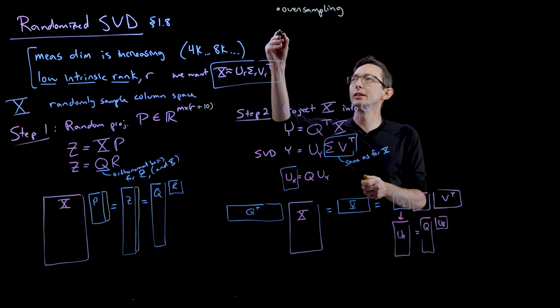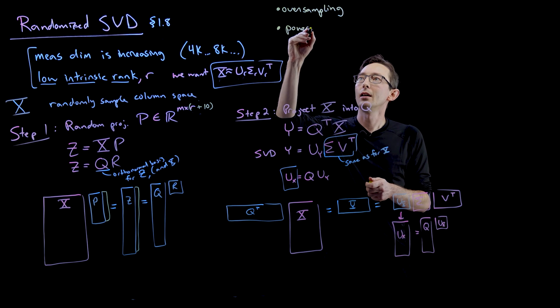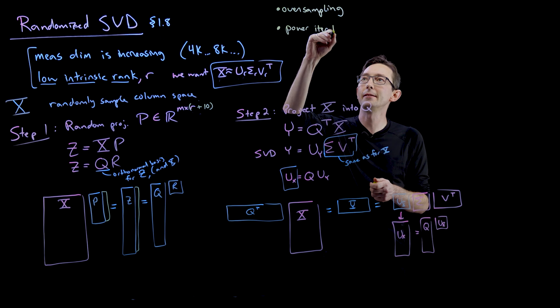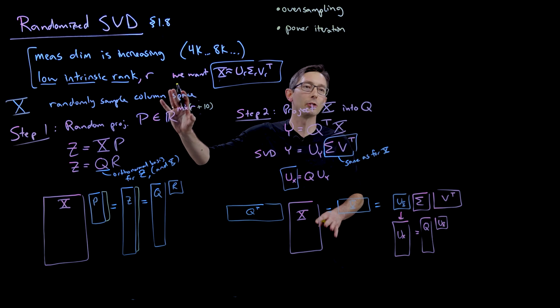The other thing that's really useful is something called power iterations. This one is especially useful if your data matrix is not exactly as low rank as you want it to be.